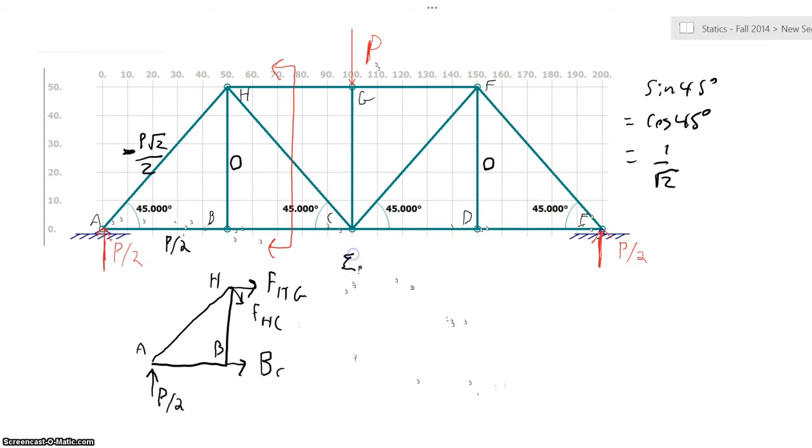Here we have three equilibrium equations. We have the sum of the forces in the X, the sum of the forces in the Y, and the sum of the moments has to be equal zero for this body that I've created by cutting my truss. Let's do the moment about point H, because that eliminates two unknowns. This distance is 5 inches, and this distance is 5 inches. We have the force of BC times 5 inches minus P over 2 times 5 inches is equal to zero. This tells us that the force of BC has to be equal to P over 2.